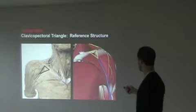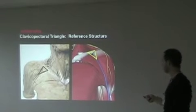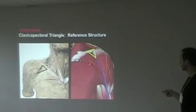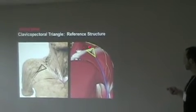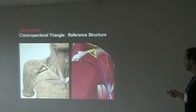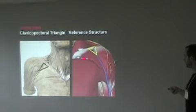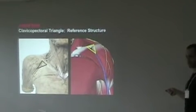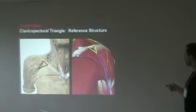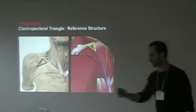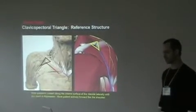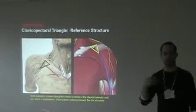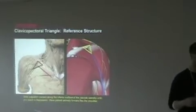We see on the left we have our real structure, and on the right we have our cartoon structure with bodybuilder-like muscles. You can see the reason why we need FAP, because they don't look the same. The clavicle pectoral triangle is our reference structure — it is a very easily palpated structure, and it is what we're going to use in order to palpate all of the other things in this area.